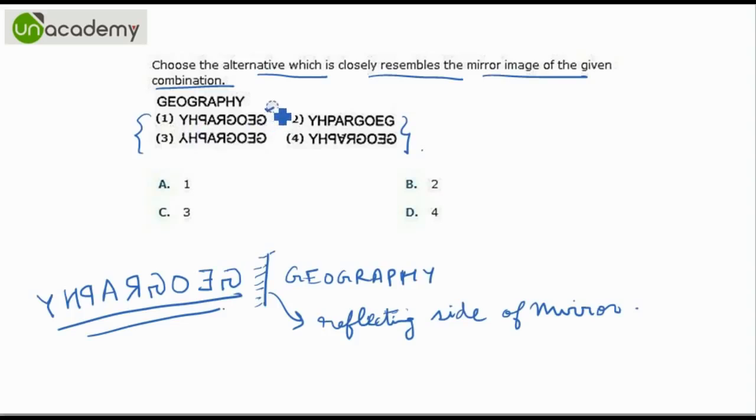Option 1 matches good. Option 2, the G is not inverted cannot be the option choice. Option 3, Y is wrongly inverted. Option 4, we have A wrongly inverted. So answer is option 1.